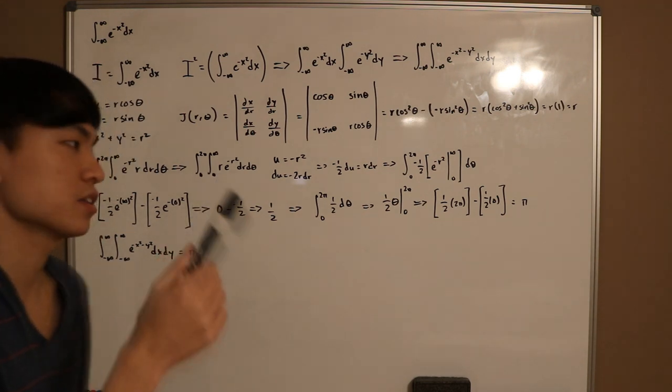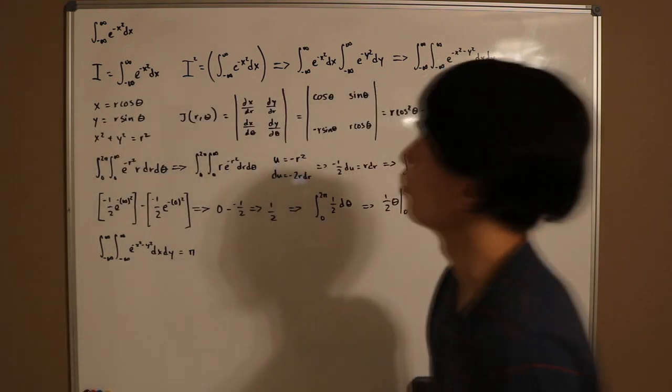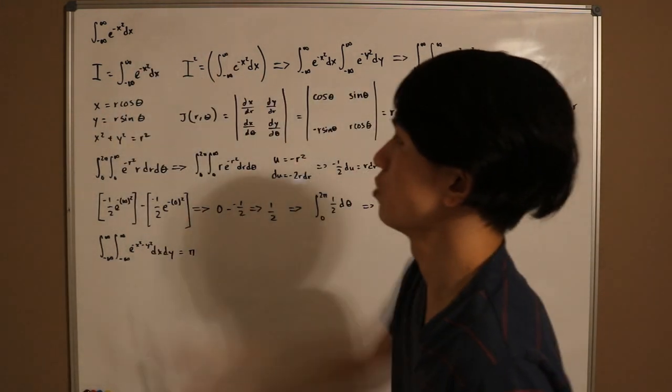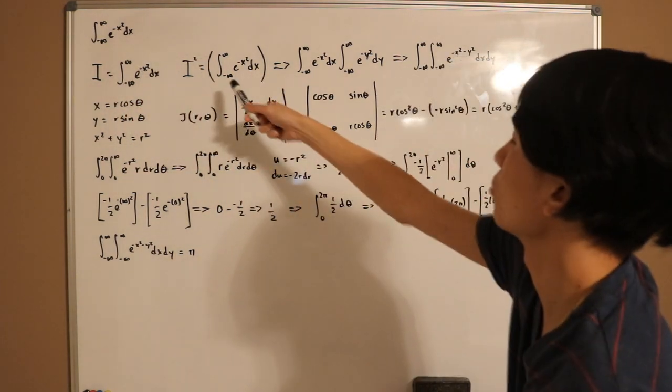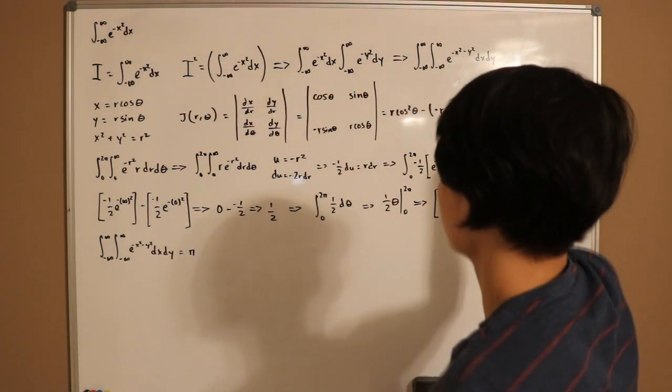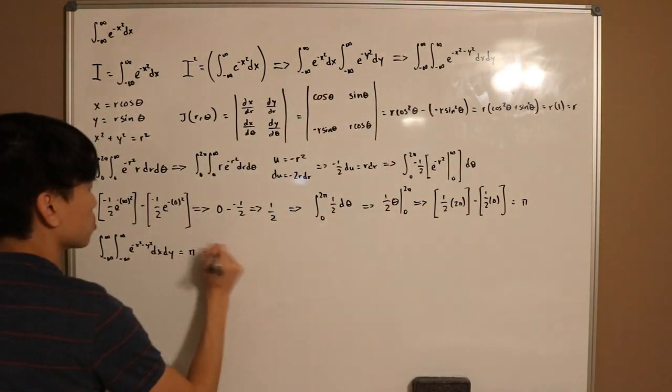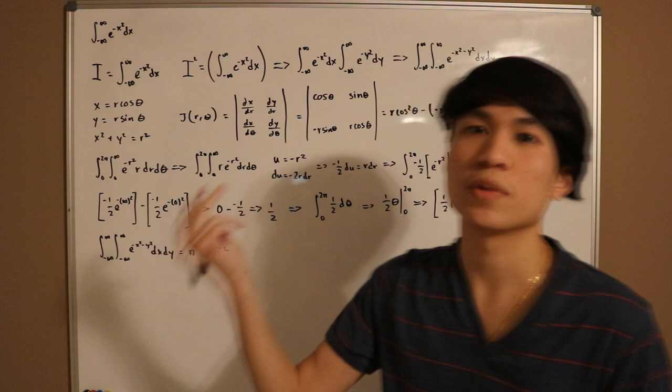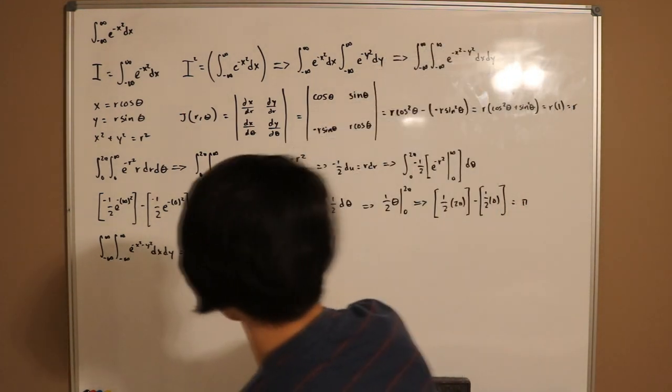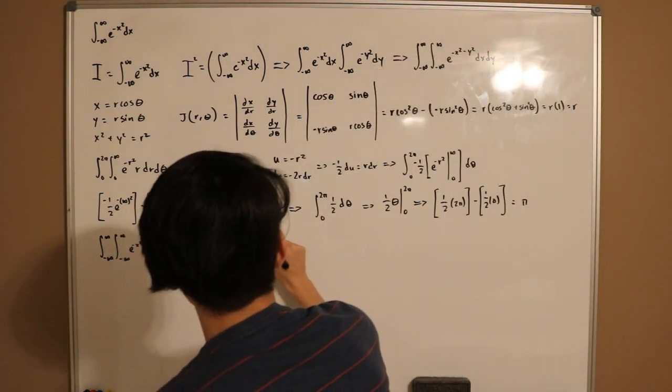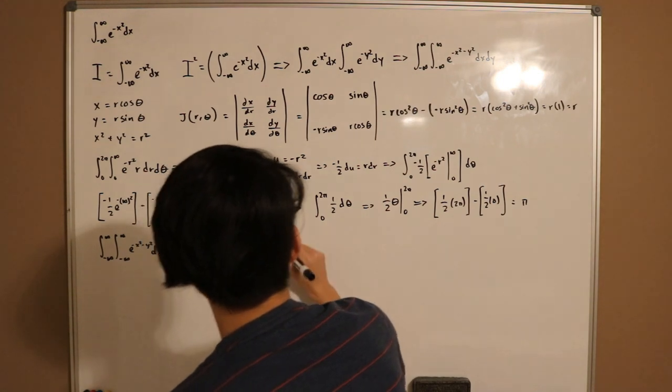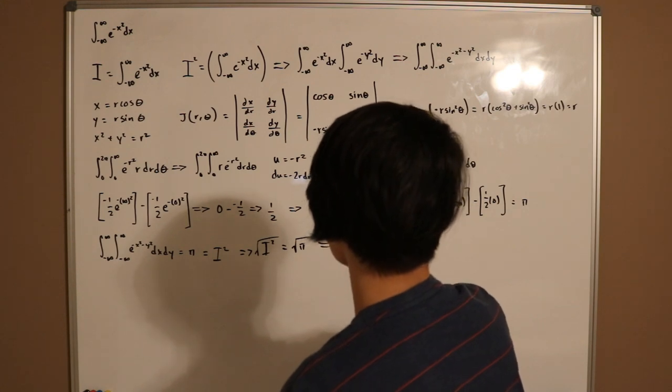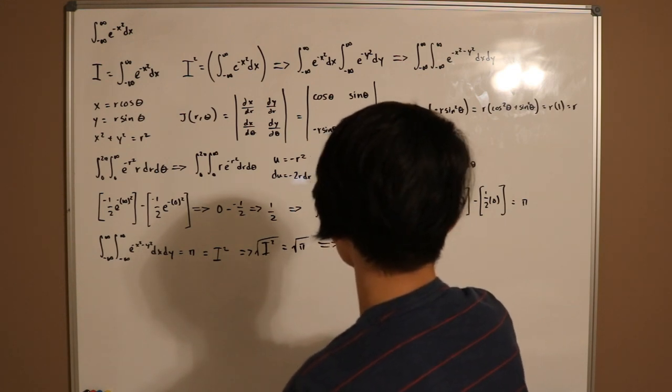However, we're not done just yet. What we're actually looking for is to compute this function. In this case, I. However, we have that I squared is equal to this. So pi is equal to I squared. And so the last step is pretty straightforward, simple. You just take the square root of both sides. I squared, take the square root of that, equal to square root of pi. And now we have that I is equal to the square root of pi.